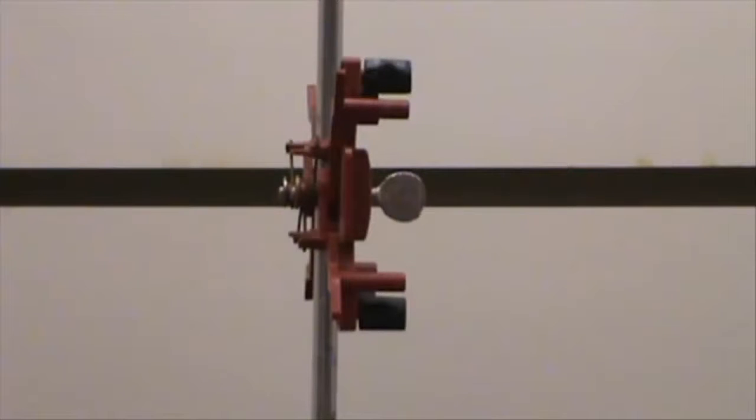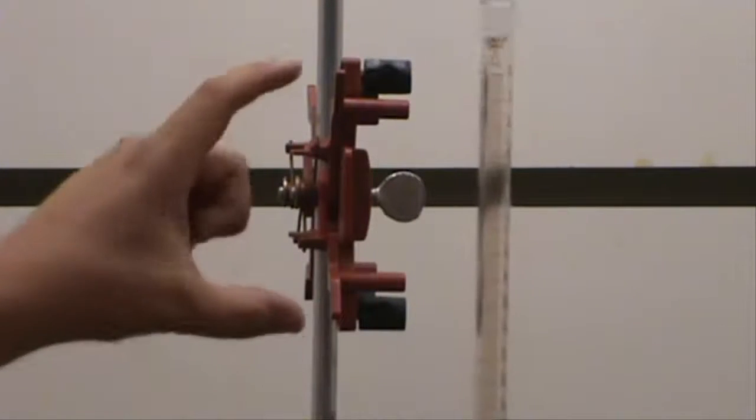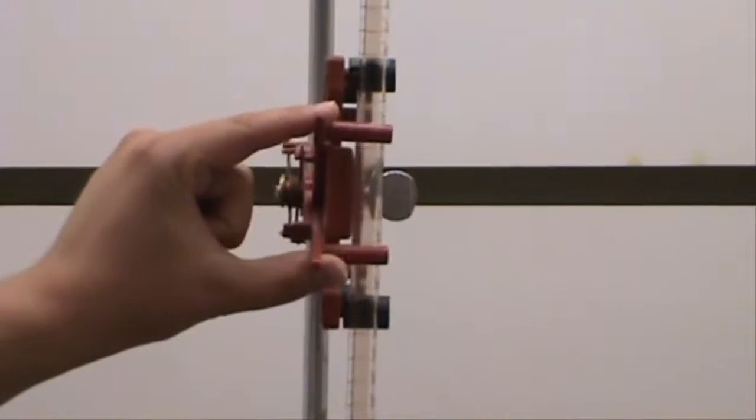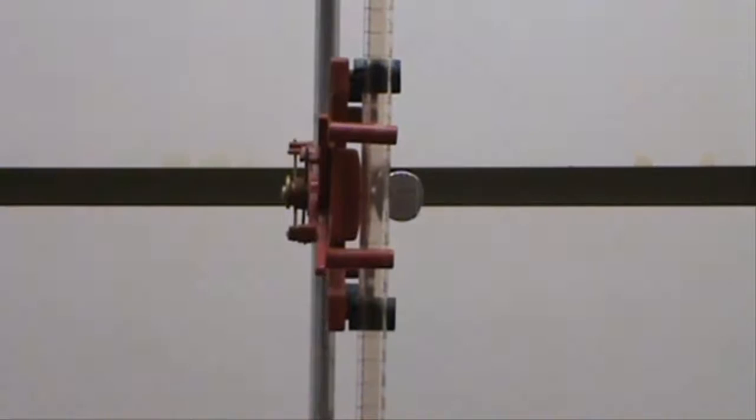It is best if one end of the burette clamp is facing you. This is where the burette is placed. Open the clamps by squeezing them together, place the burette between the clamps, and release.